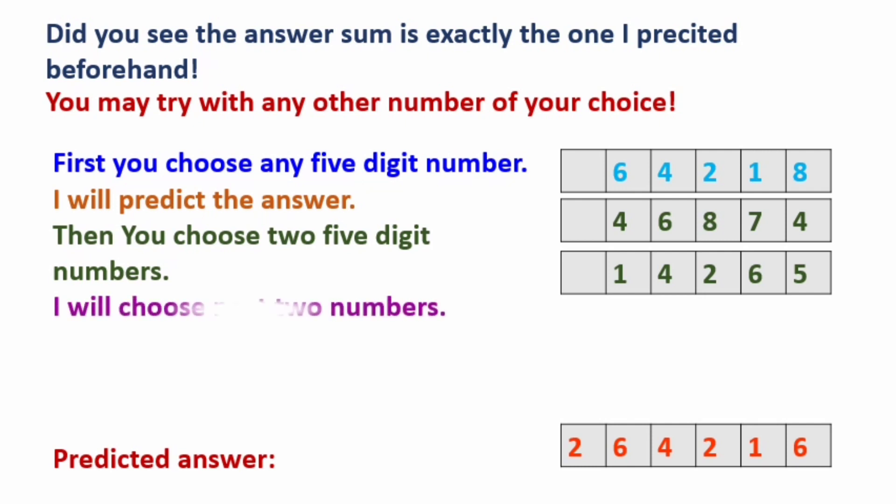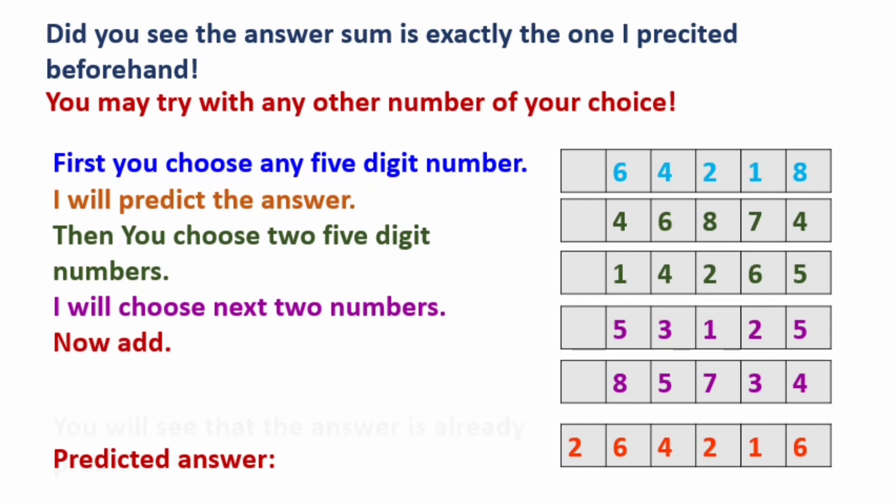Now I will choose the next two numbers. For example, 53,125 and 85,734. Now you all can add this friends and check it yourself. The answer is exactly correct.